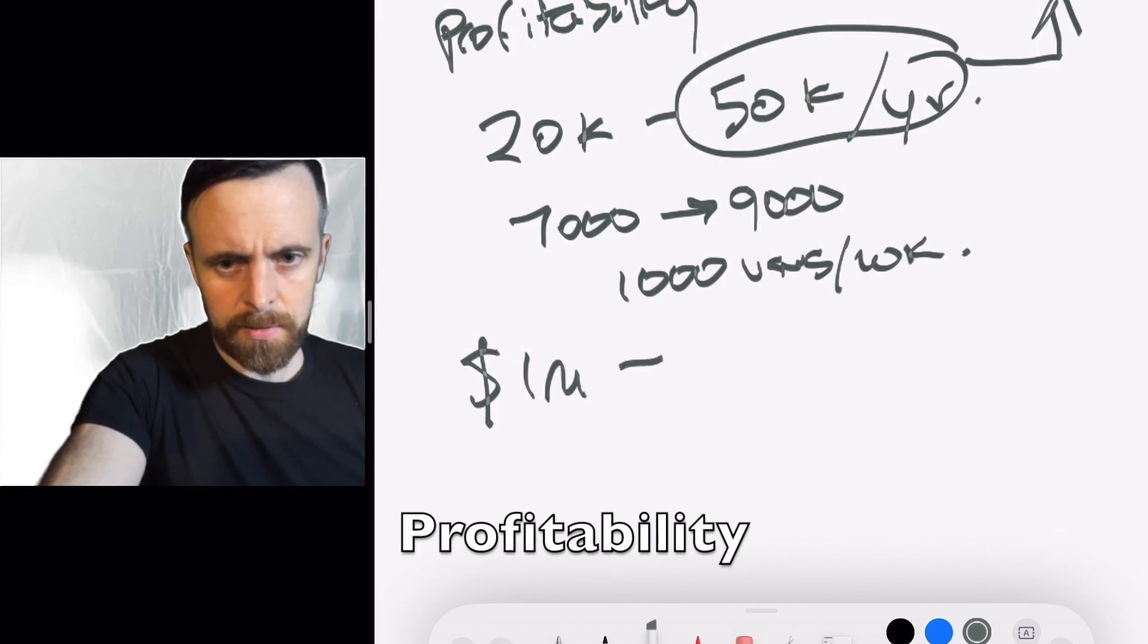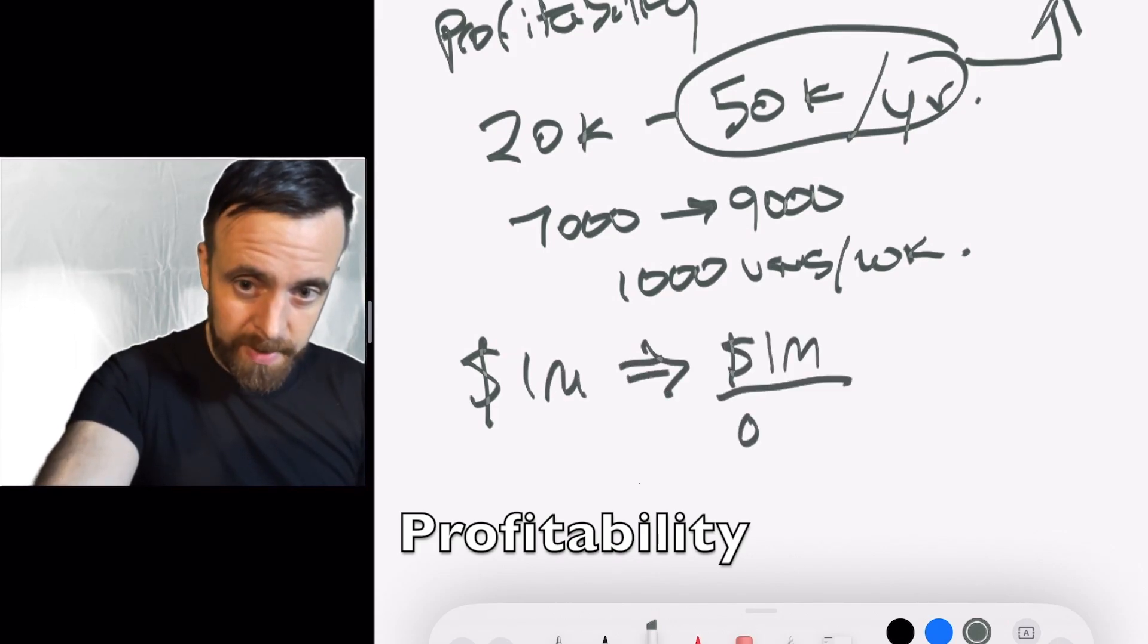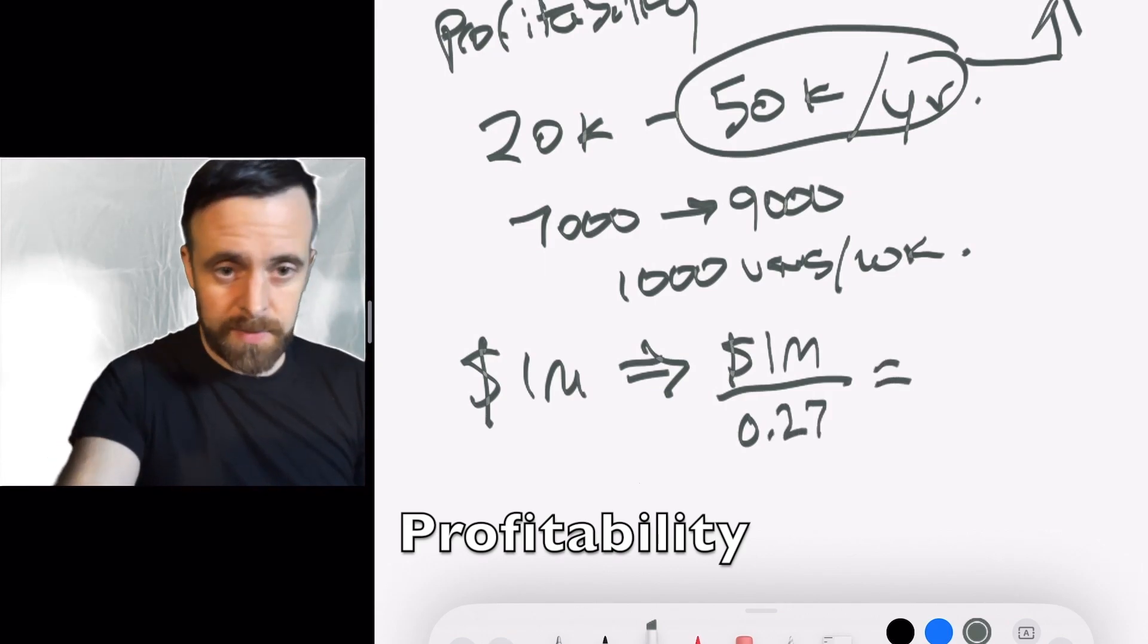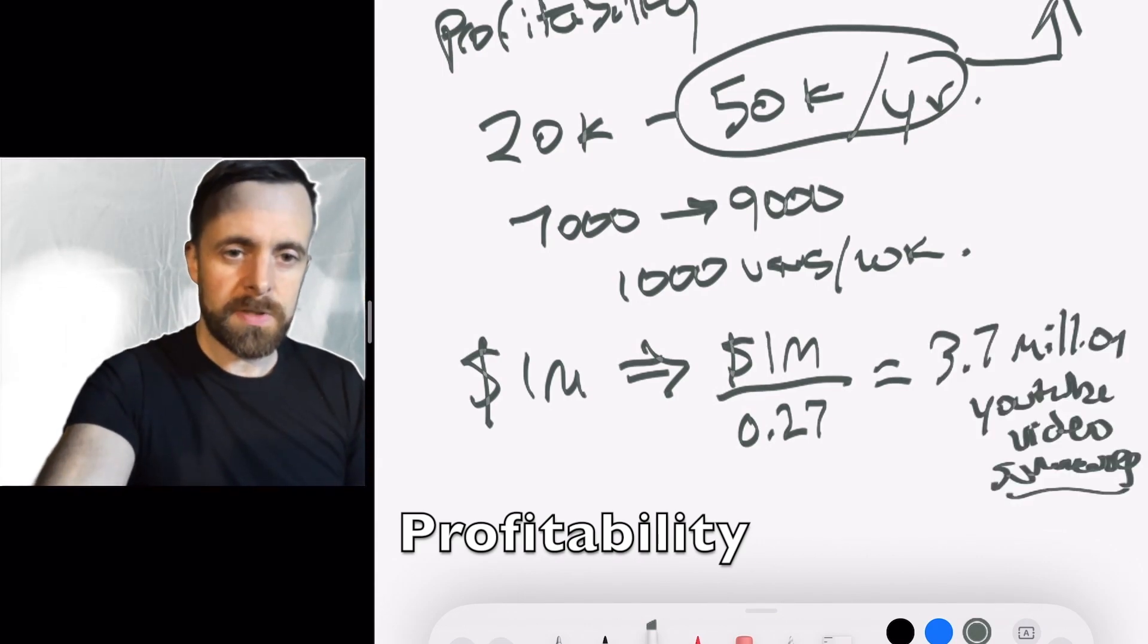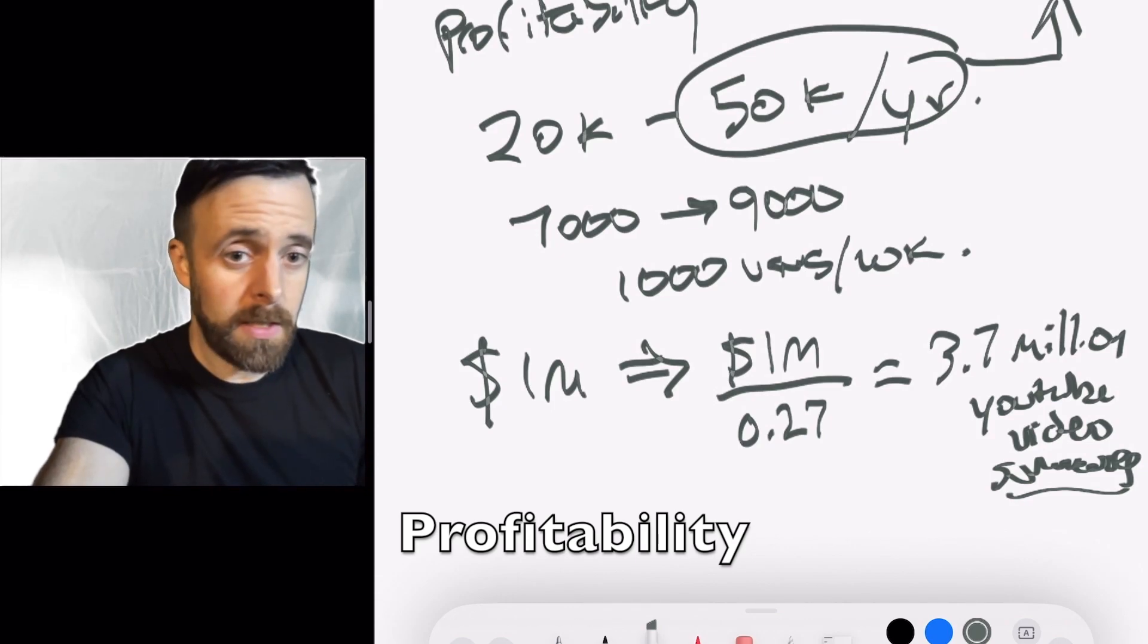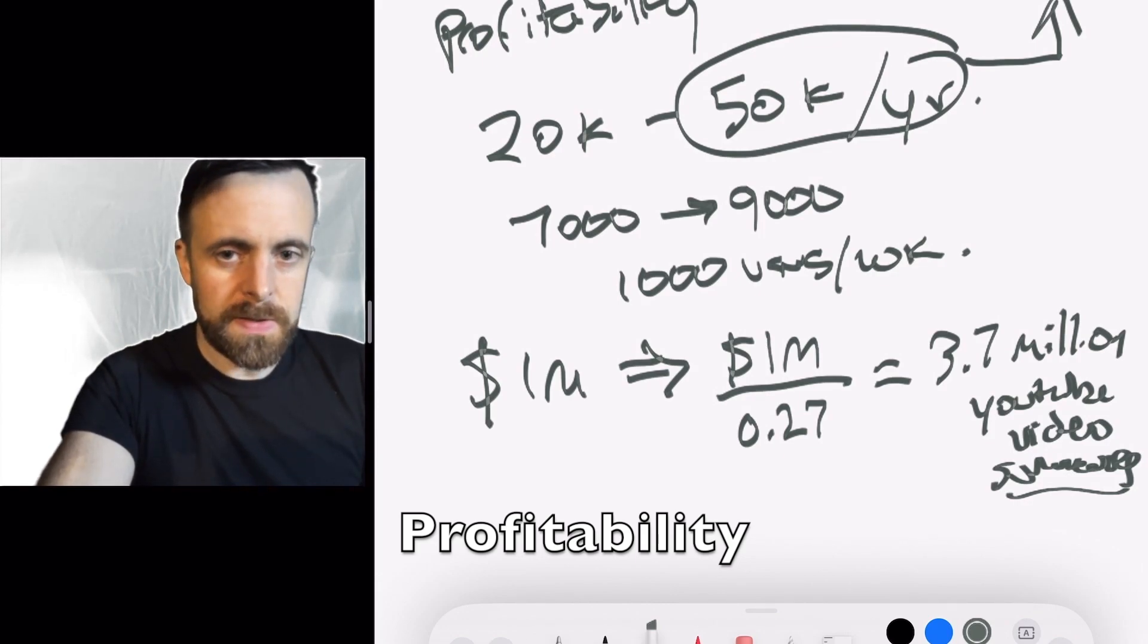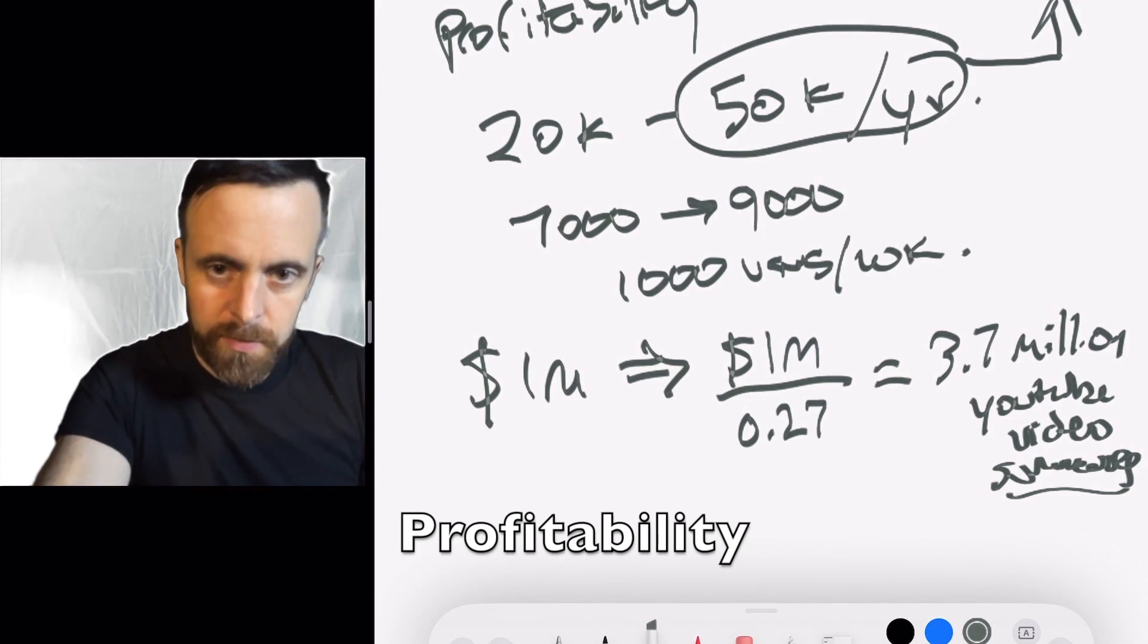So let's say you want to get to $1 million per year. Let's say the lower credit price, just to be conservative, which is $0.27, how many credits are they going to have to sell? So they're going to have to sell 3.7 million YouTube video summaries. YouTube has 2 billion users, and if they get a huge number of users, that could be within the realm of possibility. At 9,000 users, I can't see them selling that many. So they definitely need to gain a huge number of users.